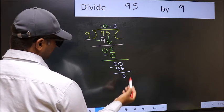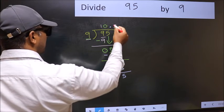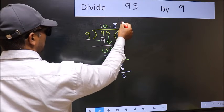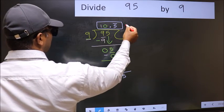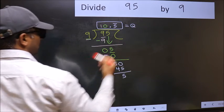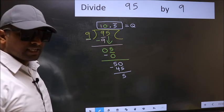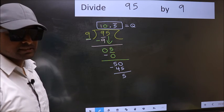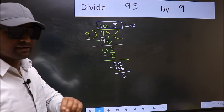We got 5 again. That means we get a bar on this number. So, this is our quotient. Did you understand? Where does the mistake happen? You should not make that mistake.